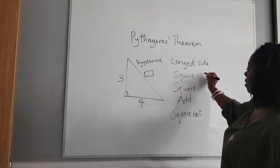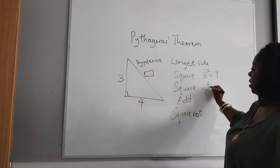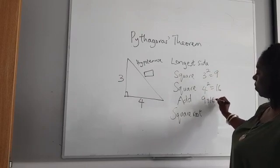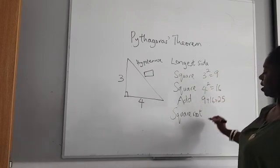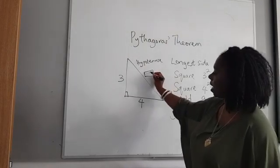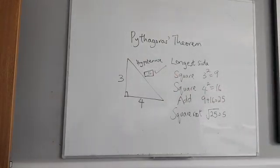So let's square 3. 3 squared is 9. 4 squared is 16. If we add 9 and 16, we get 25. Now the square root of 25 is 5. So that makes this bit here a 5. And so that's finding the longest side.